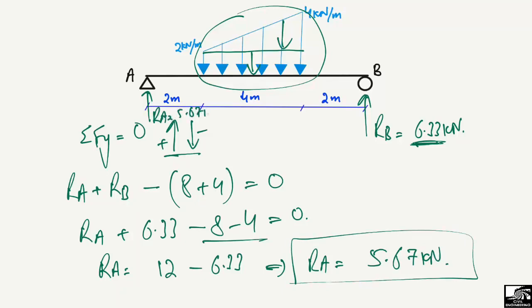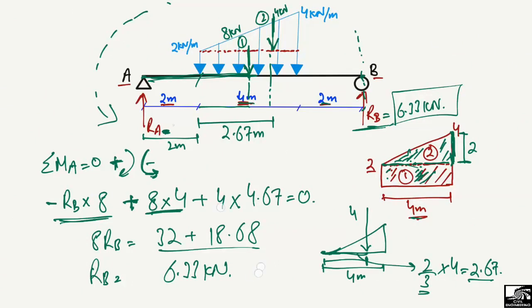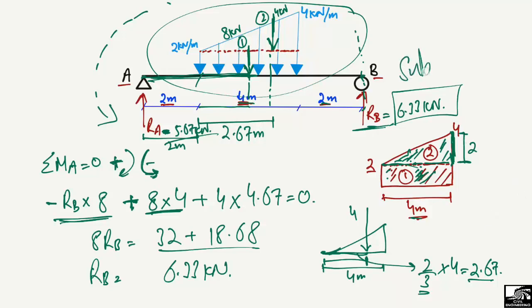So RA is 5.67 kN. That is how we find the support reactions for such a complicated load — we divide the trapezoidal load into two parts and find their loads and moment arms. Hope you guys understood. Don't forget to subscribe to the channel for more civil engineering videos. Thank you for watching.